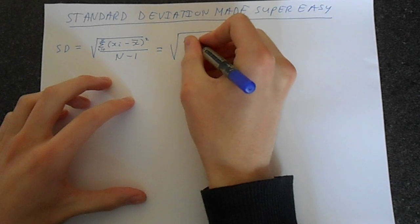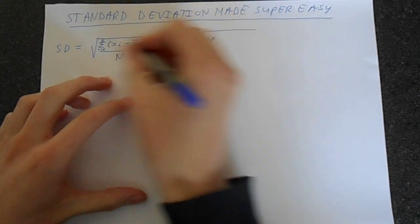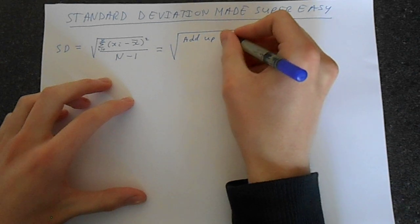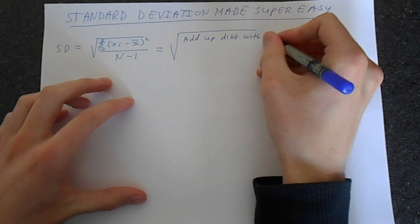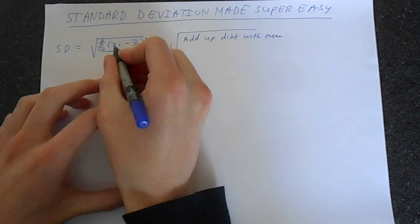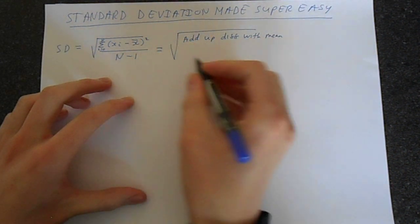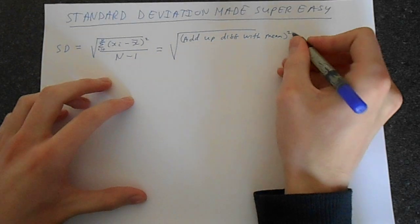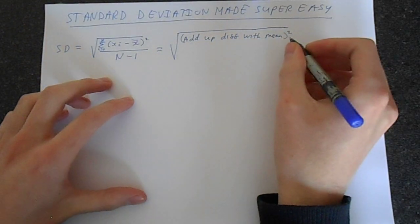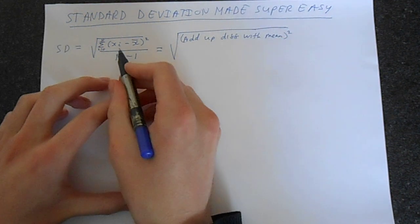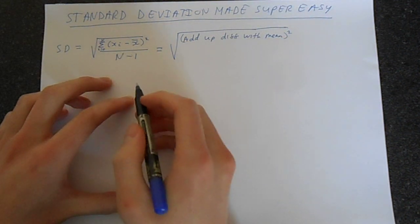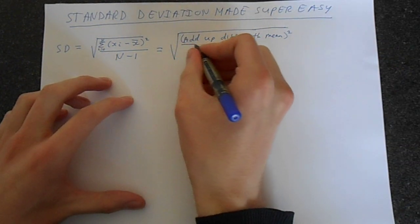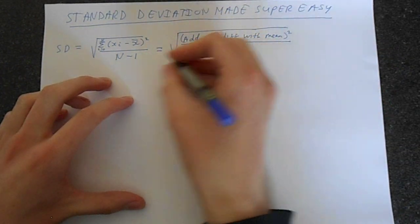So basically what you're doing is add up, that's what this symbol means here, add up the differences with the mean. This is your point minus the mean, and then you square it. The thing that happens when you square a number is it makes it always positive. So if the mean was bigger, you would get a negative number. And if you square it, it's always positive. So it's the absolute difference, rather than the plus and minus differences.